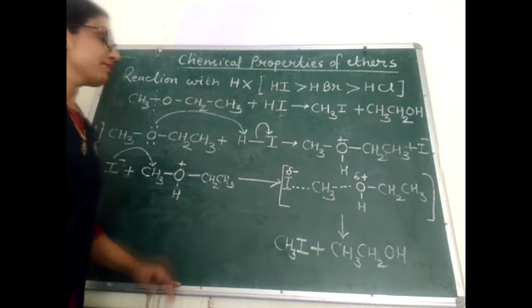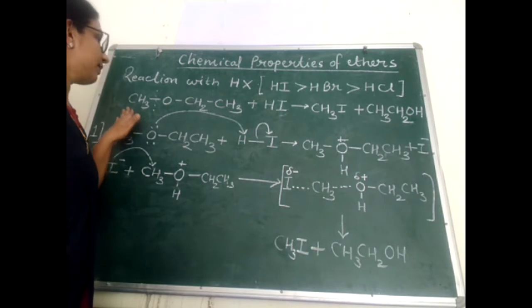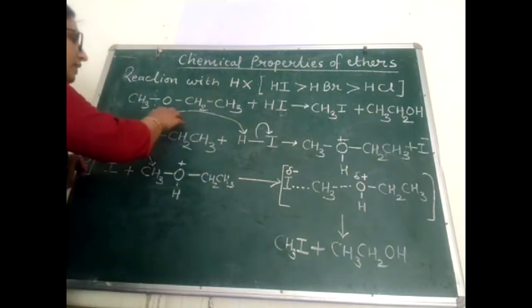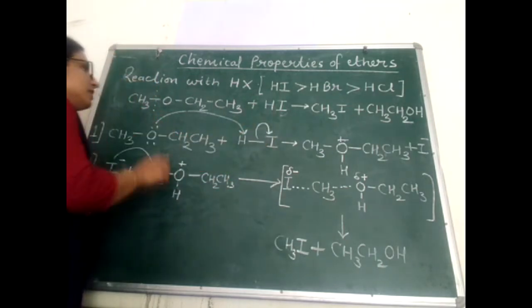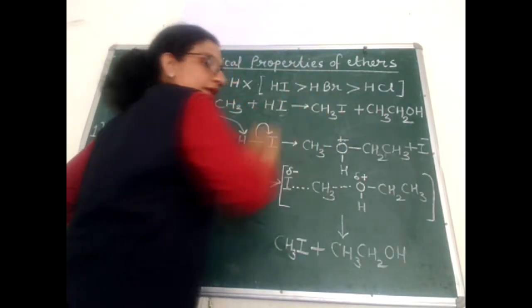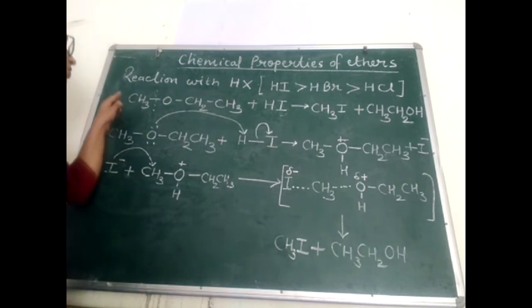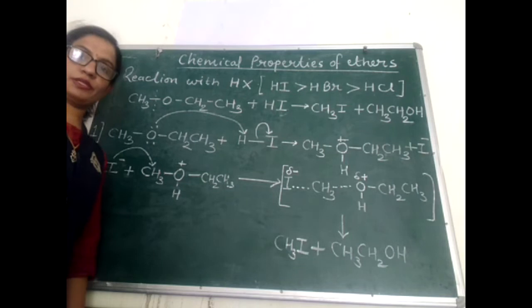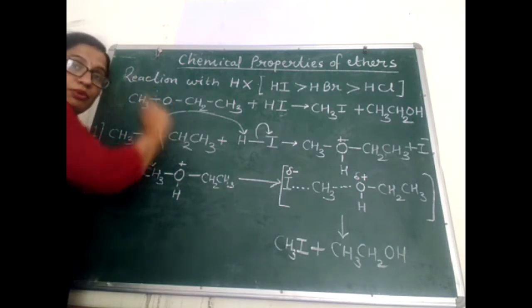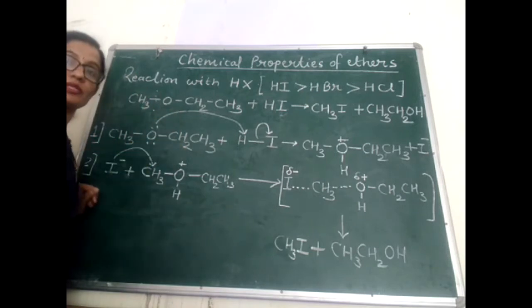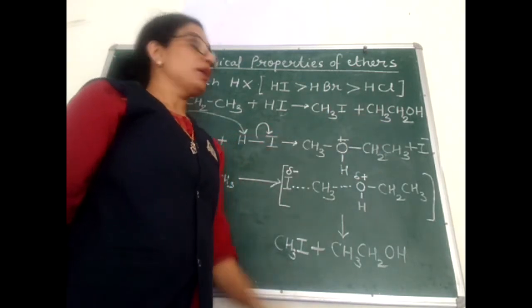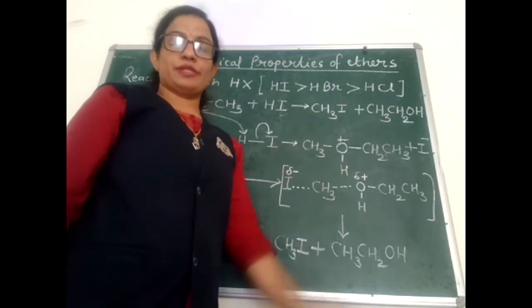Now how does the reaction take place? We are discussing the reaction of aliphatic ethers with hydrogen halide — here hydrogen iodide. When ethers react with hydrogen halide, the carbon-oxygen bond in ether breaks and alkyl halide and alcohol are formed. The question is which carbon-oxygen bond breaks, because in ethers there are two carbon-oxygen bonds, and whichever bond breaks will decide the nature of the alkyl halide and alcohol formed. The answer comes from the mechanism of this reaction.